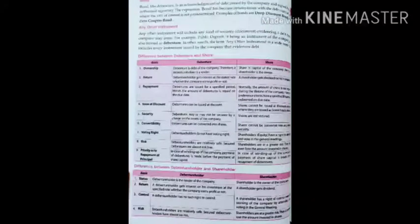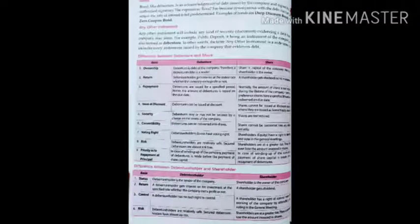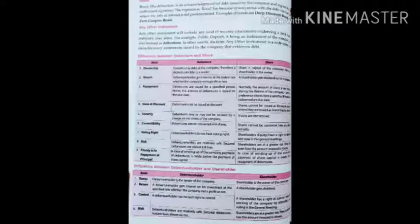Next is bond. Like a debenture, a bond is an acknowledgement of debt issued by the company and signed by an authorised signatory. The expression 'bond' has become synonymous with a debt instrument, whereas the rate of interest is not predetermined. Examples of bonds are deep discount bonds and zero coupon bonds.